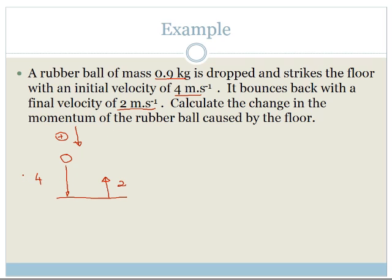That means that this is going to be plus 4, and this is going to be minus 2 because it's in the opposite direction. Now we can apply our information to our equation.